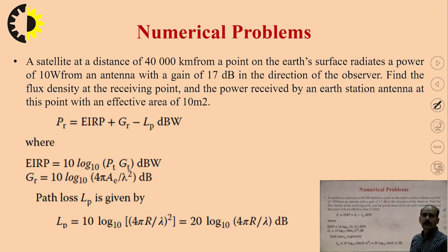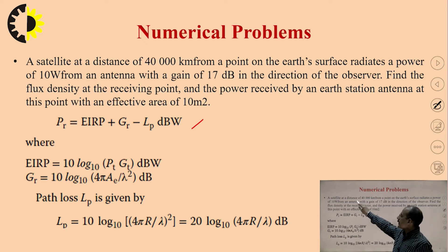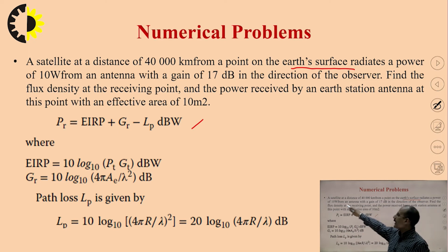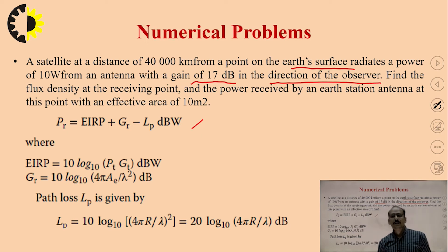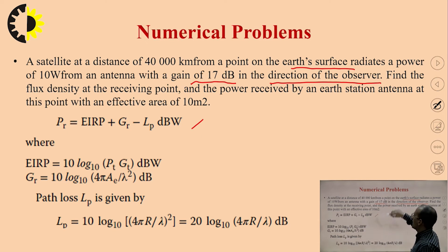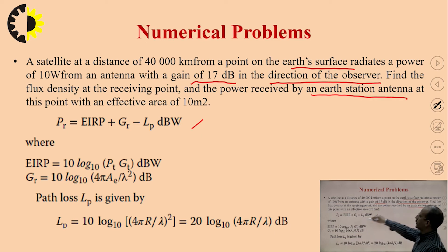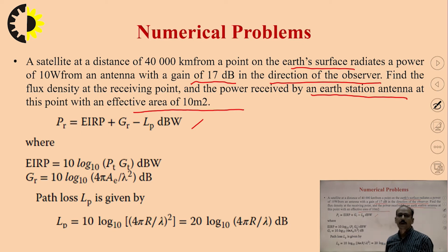The next numerical is also very important because the satellite link equation in dBW is widely used. A satellite at a distance of 40,000 km from a point on the Earth's surface radiates a power of 10 W from an antenna with a gain of 17 dB in the direction of the observer. Find the flux density at the receiving point and the power received by an earth station antenna at this point with an effective area of 10 m².